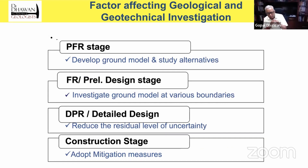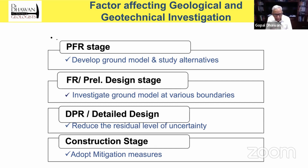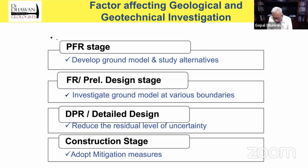The second group of factors which influences investigations is the stage of the project. At PFR stage, we may apply the same tools but on a different scale, because here our aim is to develop the ground model and study various alternatives, then choose the best one. At feasibility or preliminary design stage, we have to investigate the ground model at various boundaries. At DPR or detailed design stage, we have to reduce the residual level of uncertainty or risk. During construction, we have to adopt mitigation. In all stages, investigation will continue — investigate, investigate, investigate till the project is constructed. If you don't do that, you will have to continue investigation even after construction because there will be problems which will trouble you later on.